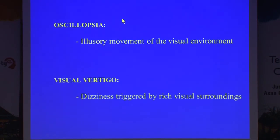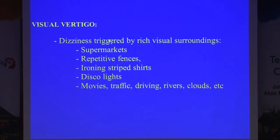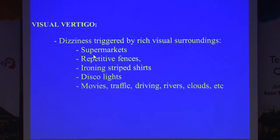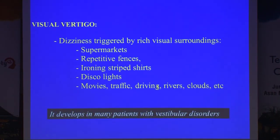Visual vertigo can be defined as dizziness triggered by rich or stimulating visual surroundings. Many patients with vestibular disorder report that problems are worse when going to the supermarket because of flickering lights and too much optokinetic stimulation when they move, with children moving around. All this visual stimulation is provoking of symptoms — or if they watch repetitive fences, movies, traffic, driving, moving things. That's what we call visual vertigo, and it develops in many patients with vestibular disorders.